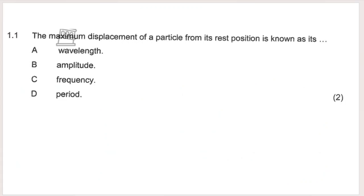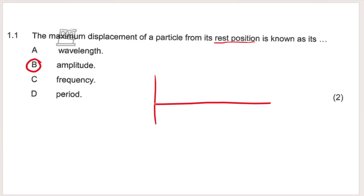I'm going to start with some multiple choice questions. In physics and chemistry the first 5 to 10 questions are always multiple choice and sometimes they can be quite tricky. This one says the maximum displacement — displacement is basically the distance of a particle from its rest position — is known as its amplitude. If you have a rest position and draw in a wave, that is the maximum displacement of a particle from its rest position. The maximum displacement is known as the amplitude.